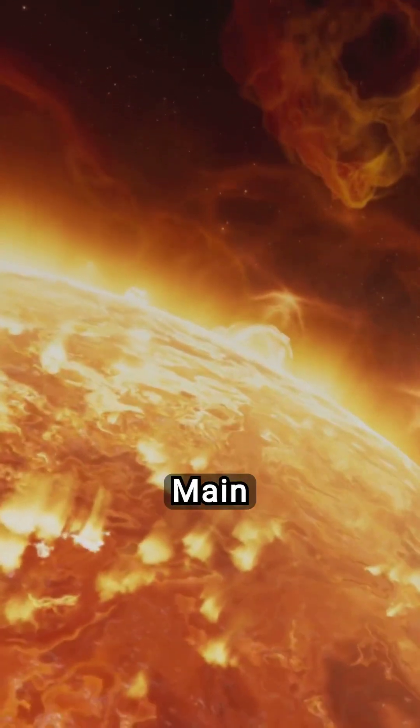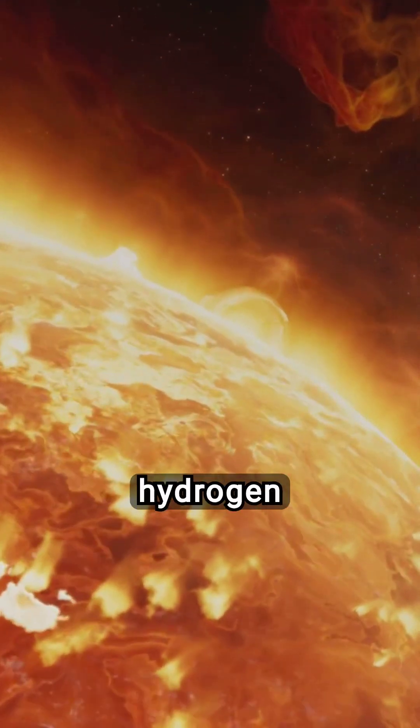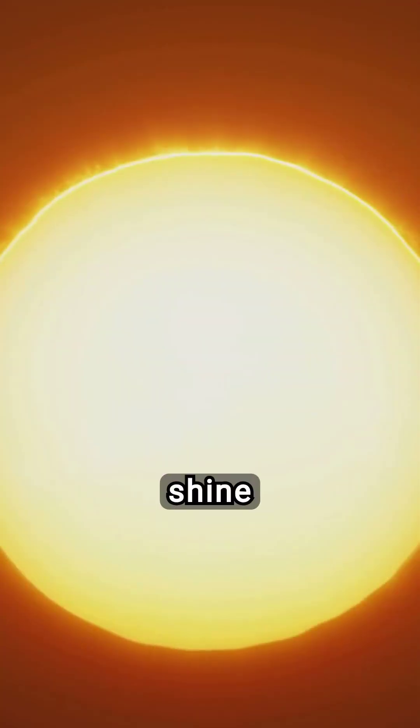As they mature, they enter the main sequence, a period of stable hydrogen fusion, exemplified by our own Sun. These stars shine brightly, sustaining life on planets orbiting them.